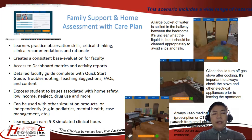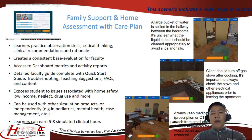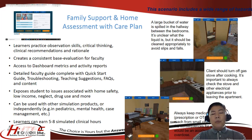Our next module is family support and home assessment with care plan. What's great about this is that we actually go into the living quarters of the patient and assess the family and living conditions. As you can see on the screen, there is spilled water, a gas stove that may not have been turned off, and scattered things inside the house — potential hazards for the family that we observe and assess. Learners practice observation skills, critical thinking, clinical recommendations, and rationale. It creates a consistent evaluation framework for faculty and provides access to dashboard metrics and activity reports.